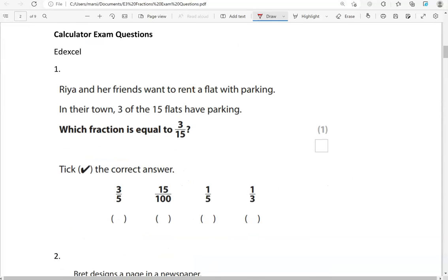From now on, we can use a calculator. Ria and her friends want to rent a flat with parking. In their town, three of the 15 flats have parking. Which fraction is equal to three-fifteenths? Tick the correct answer.